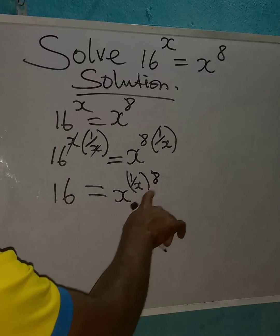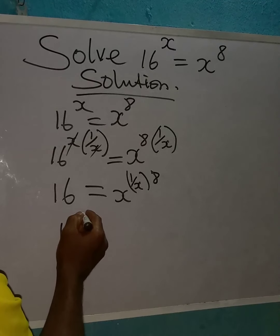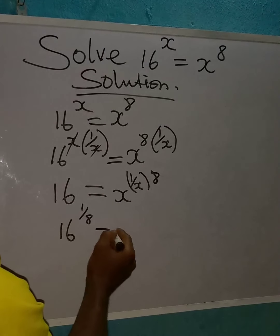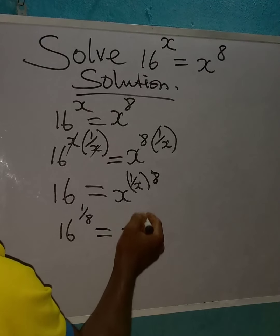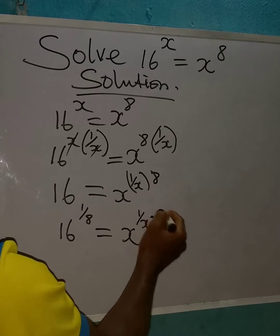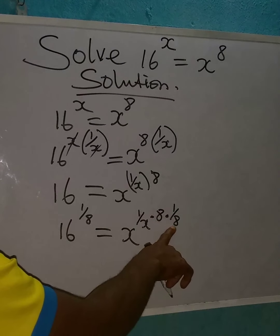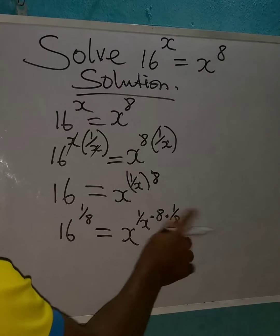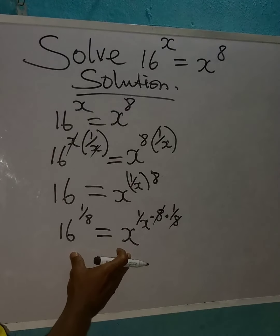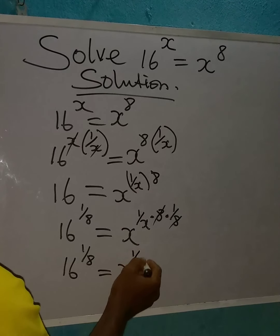The only way I can eliminate 8 is to multiply the powers by 1 over 8. So I will have 16 to the power of 1 over 8 — because whatever I do on one side I have to do on the other side — equal to x to the power of 1 over x, multiplied by 8, then multiplied by 1 over 8. This way the 8 cancels, leaving 16^(1/8) = x^(1/x).